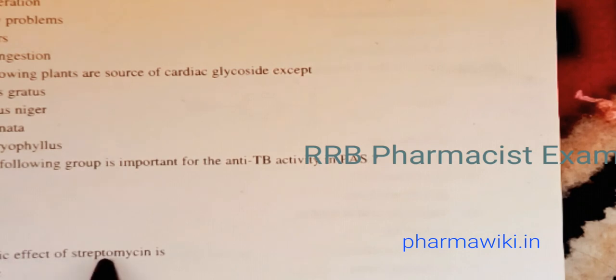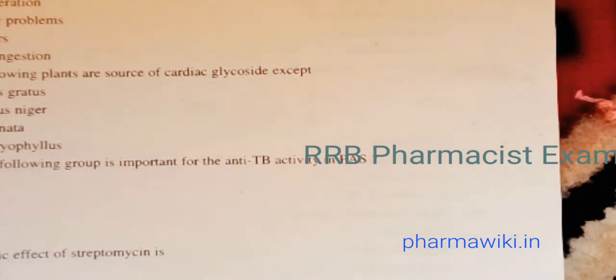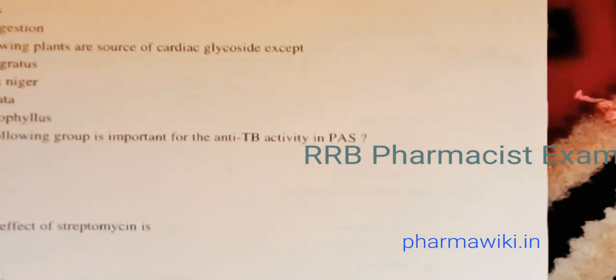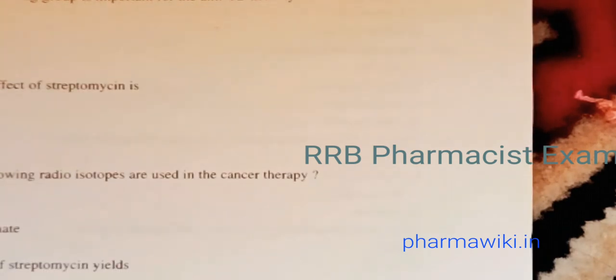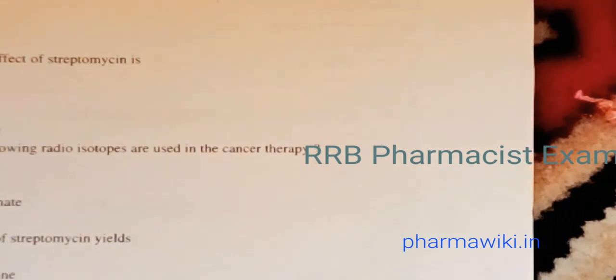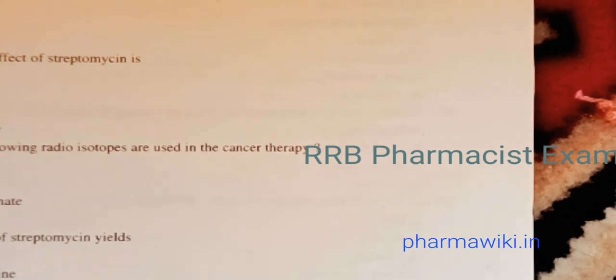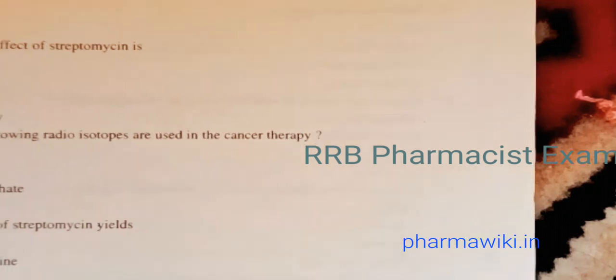Question 70: Which of the following groups is important for anti-TB activity in PAS (para-aminosalicylic acid)? The answer is the NH2 group. Question 71: The main toxic effect of streptomycin is ototoxicity.